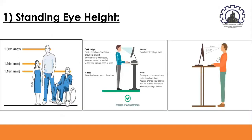Standing eye height is the height above the ground of the eye of a person standing erect. It is used in ergonomics as a maximum allowable dimension to locate visual displays for standing operators. Displays should not be higher than the standing eye height of a short operator, so that short operators do not need to extend their neck to look at displays.